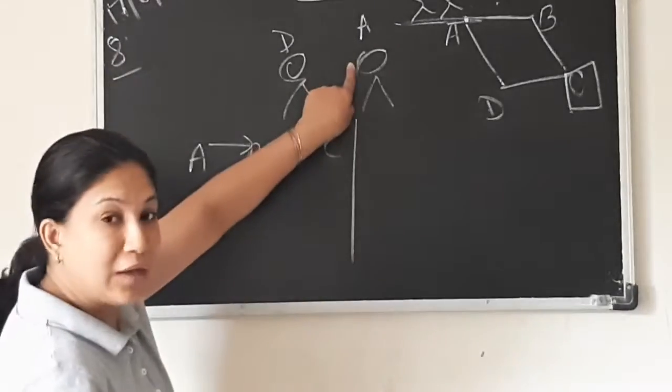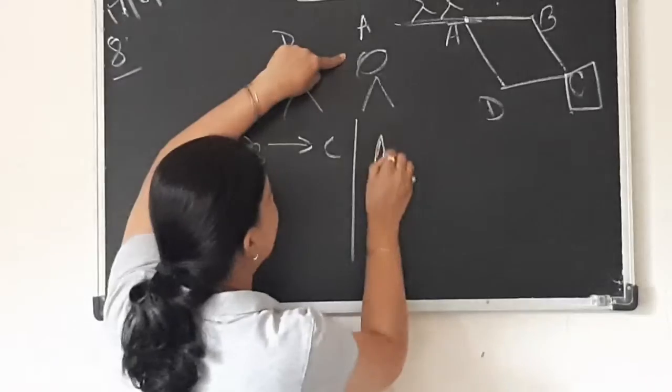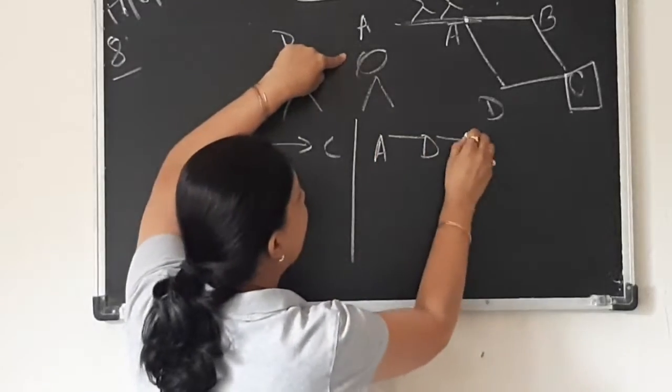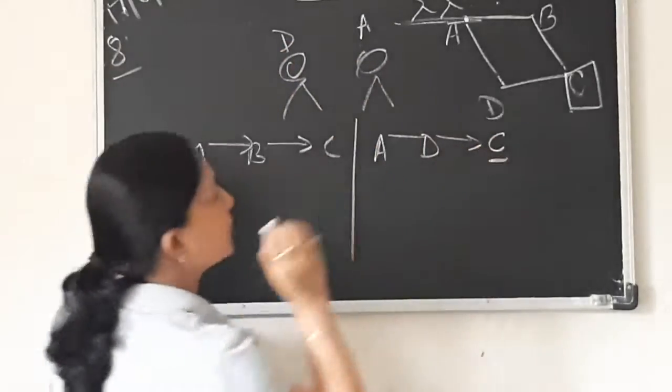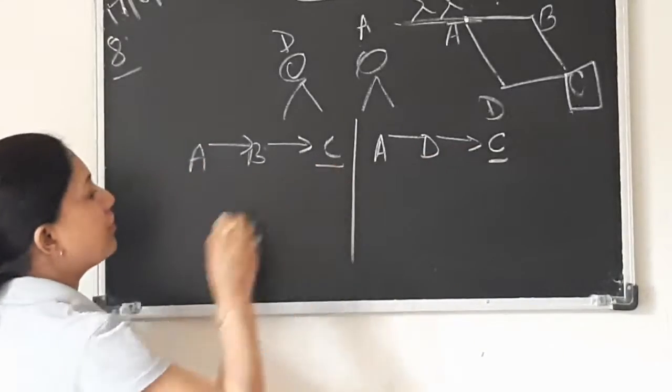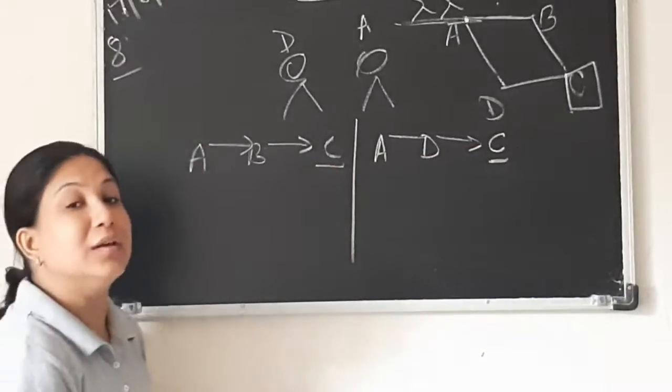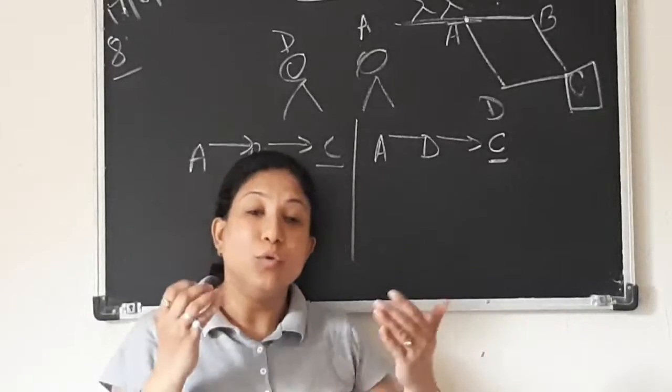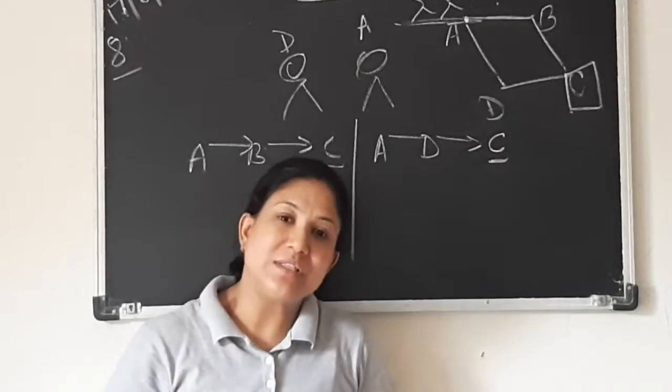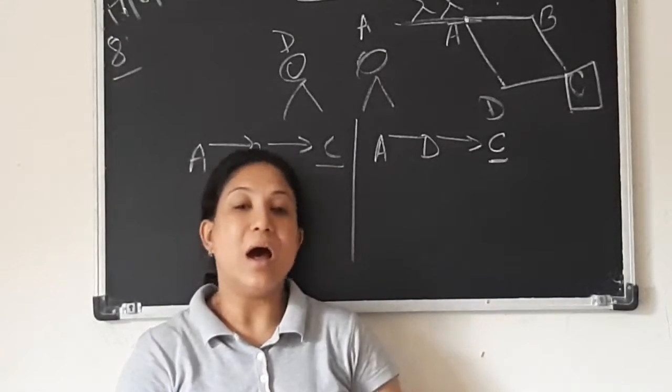Whereas Aiyu will travel from A to D and from D, he reaches C. Both of them have reached point C. The question is who has travelled more distance and by how much?